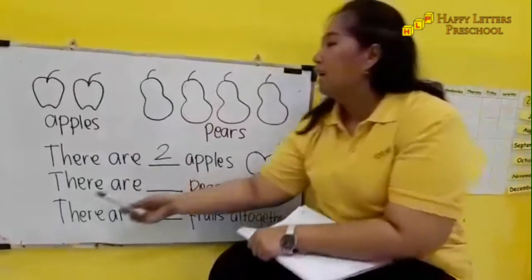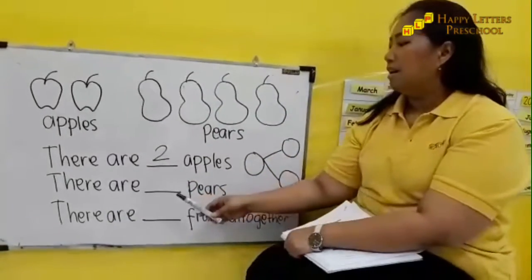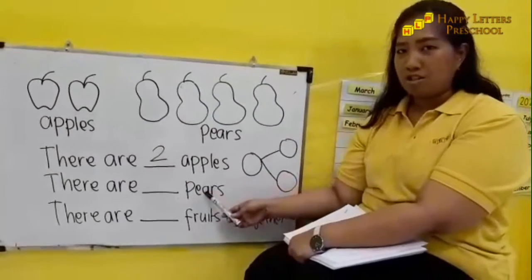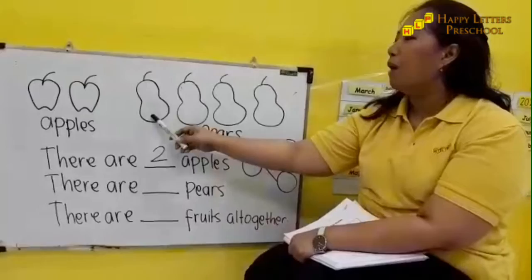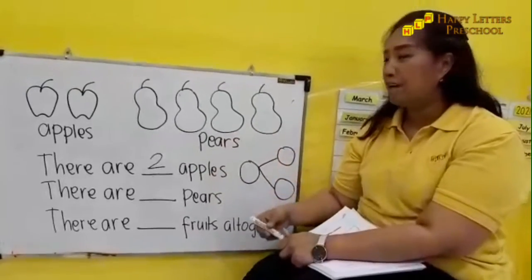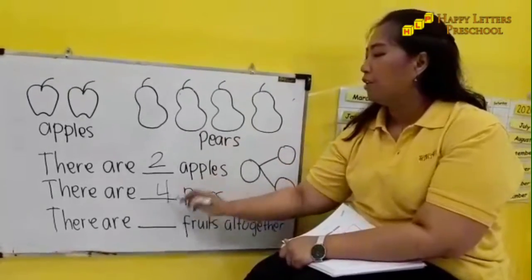Next sentence: There are blank, blank, blank pears. How many pears? One, two, three, four. How many pears? Four, four. Let's write it.